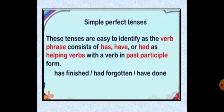Jis tarah continuous tense mein was, were, is, am, are and will be is a helping verb and it's compulsory, same is in simple perfect tense — we have helping verbs like has, have and had, with a verb in past participle form. Hamein verb bhi past participle form mein rakhna hai. For example: has finished, had forgotten, have done. Has/have/had plus past participle.